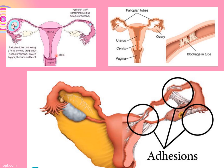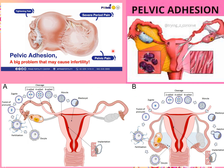This image shows the fallopian tube with scar tissue. The fertilized egg is shown stuck in the tube, demonstrating an ectopic pregnancy. You can see pelvic adhesions and the uterine cavity in relation to the ectopic implantation site.